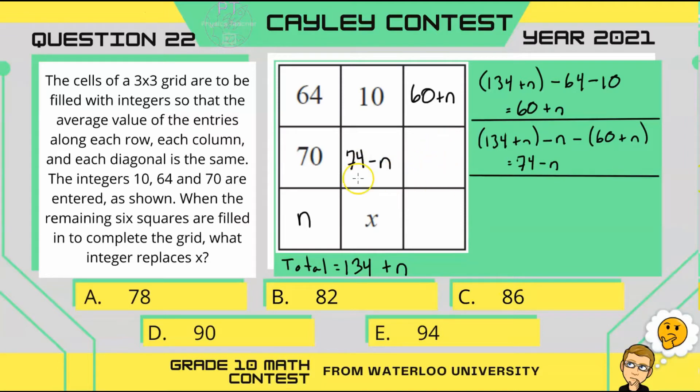All right, we only have two more cells to fill in. So, this one here would be the total, 134 plus n, and we're going to be looking at this row. So, let's subtract 70 and 74 minus n, which reduces to 2n minus 10. So, we'll write that in right here.